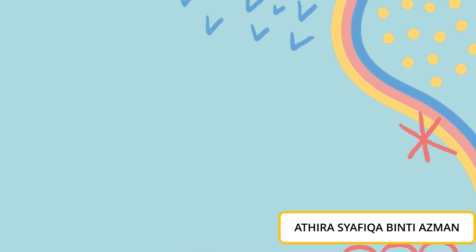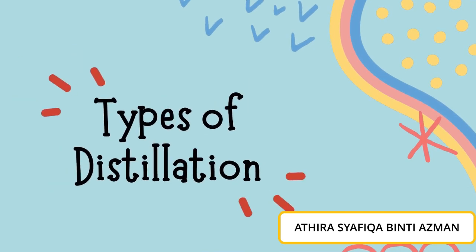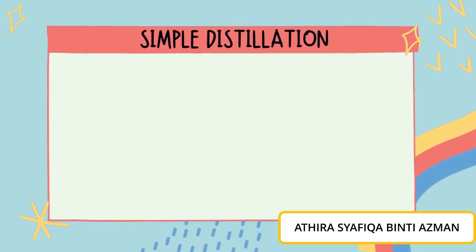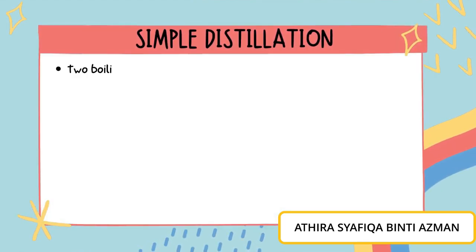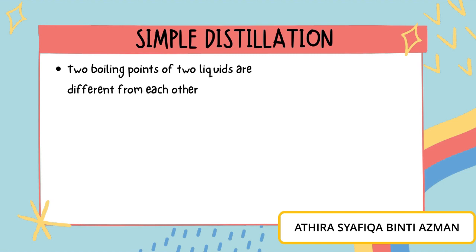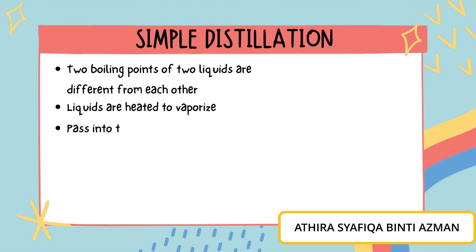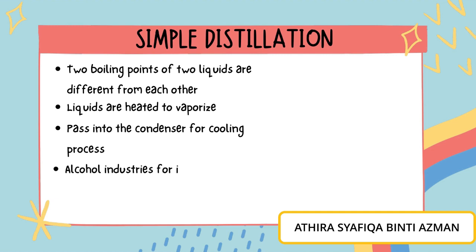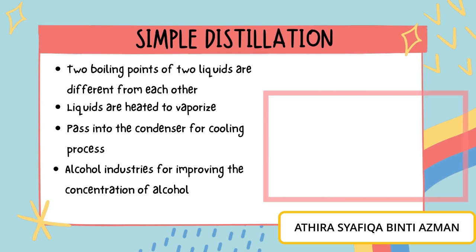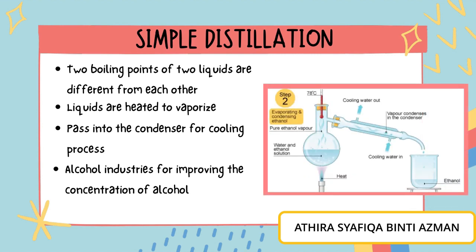There are a few types of distillation that exist in industry. First and foremost, simple distillation is used when the boiling points of two liquids are very different from each other. The mixture of two liquids is heated to vaporize the more volatile liquid component, and the vapor passes into the condenser for the cooling process. Simple distillation is usually used in both large and small scale alcohol industries, where the process can improve the concentration of alcohol to obtain full-grade alcohol.